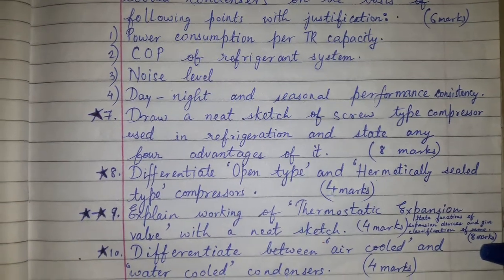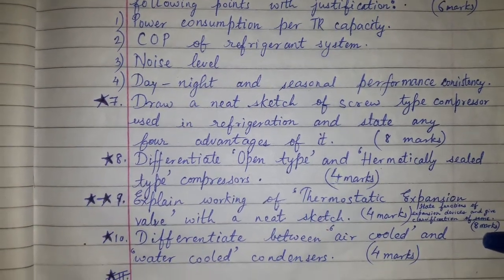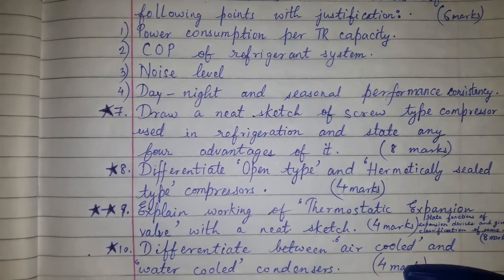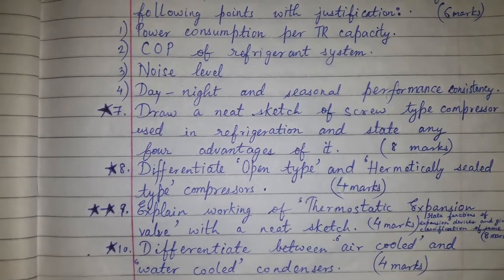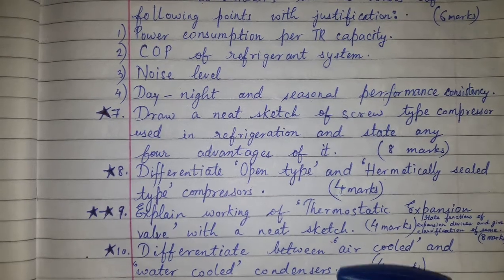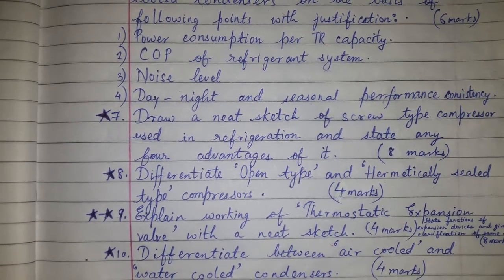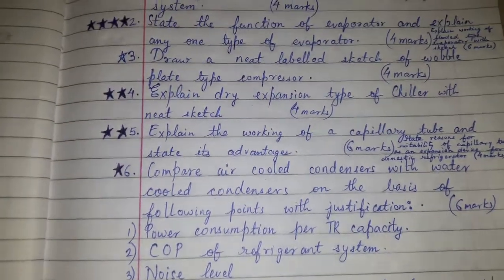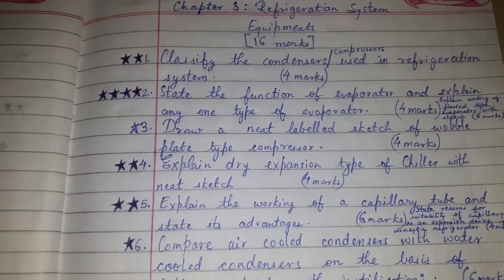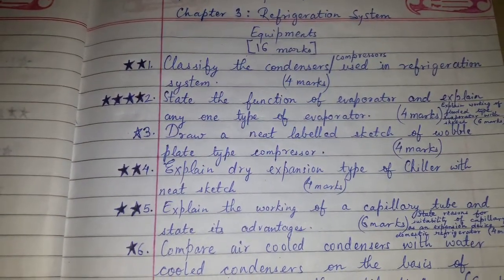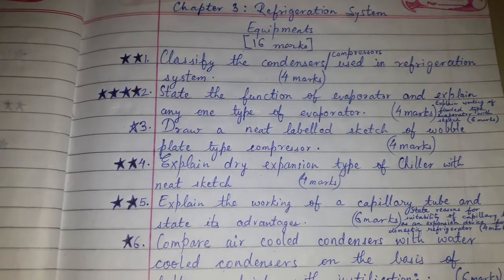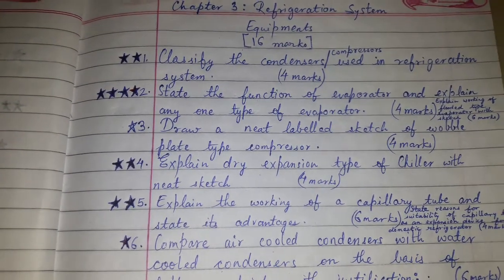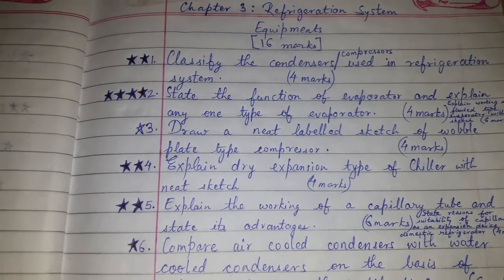If questions are given for more marks, they will compile two or three questions together so you can write and get eight marks. Another important question: differentiate between air cooled and water cooled condensers. These are the questions which are more likely or important from the exam point of view for chapter number three, refrigeration system equipments. Please like, comment, share and subscribe. Thanks for watching.